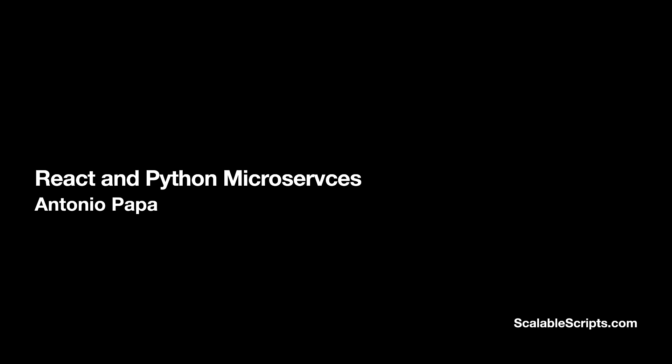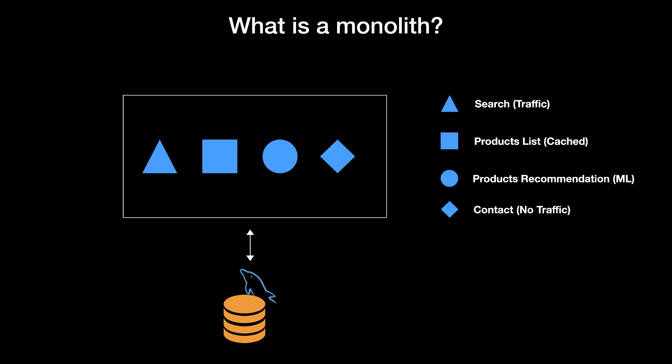Let's start by understanding what a monolith is and what microservices are. A monolith can be a large code base that has a lot of functionalities and is connected with a single big database. In this example, you can think of this as an e-commerce site. We have a search functionality with a lot of traffic, a product list which is cached, and a product recommendation functionality which uses machine learning.